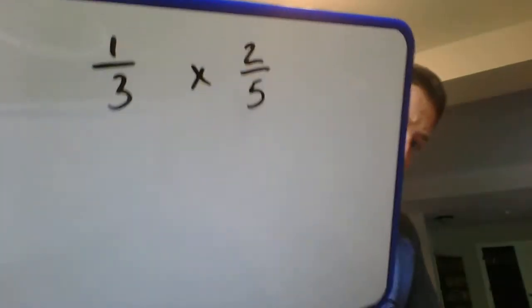So let's say, for example, we wanted to do one-third times two-fifths. First thing I'm going to do is write it out like that: one-third times two-fifths.